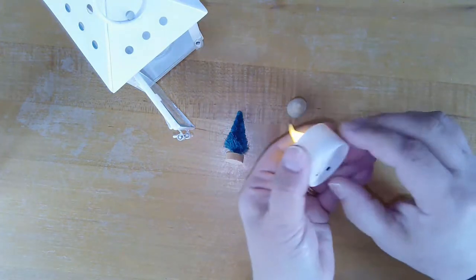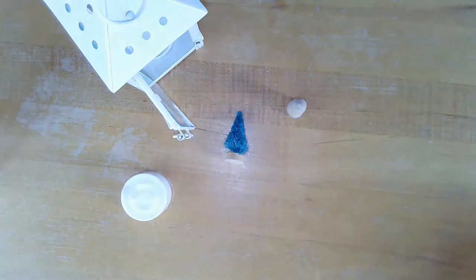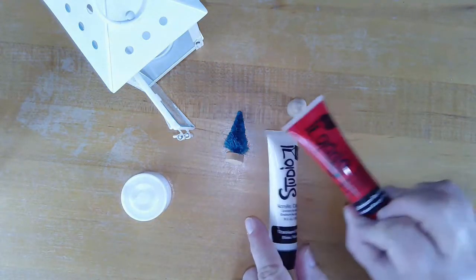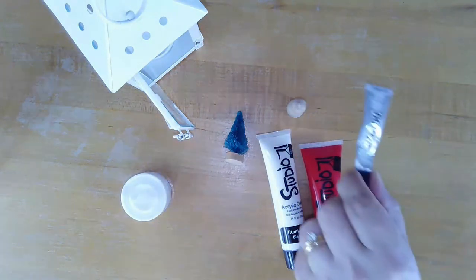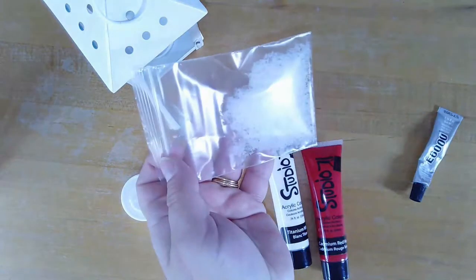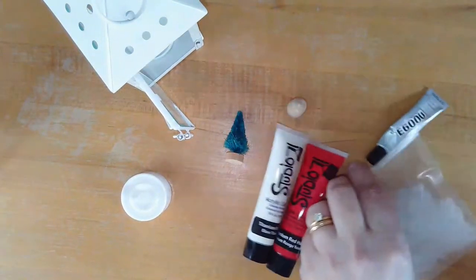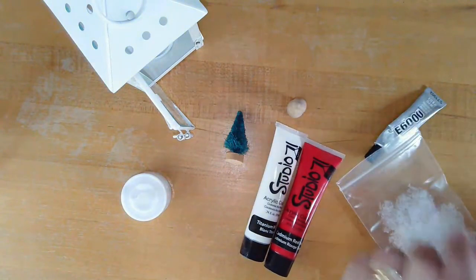The battery switch is on the bottom so you can turn it off and save the battery. Some white paint, some red paint, a little bit of permanent glue, some artificial snow, and a black pen and a paintbrush.